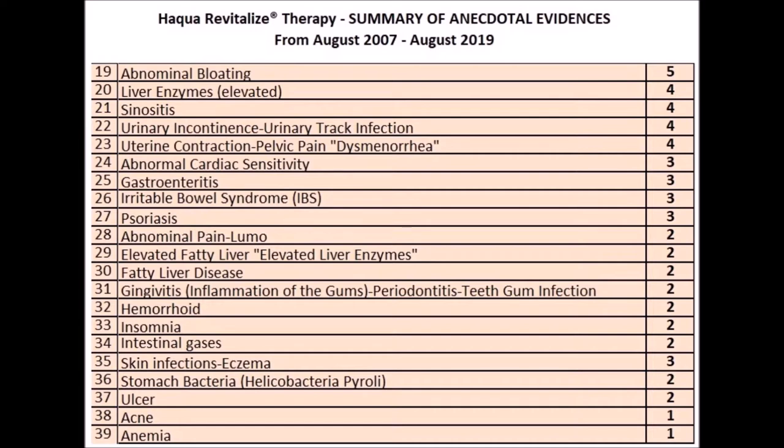28. Abdominal pain: 2 people. 29. Elevated fatty liver or elevated liver enzymes: 2 people. 30. Fatty liver disease: 2 people. 31. Gingivitis or inflammation of the gums: 2 people.